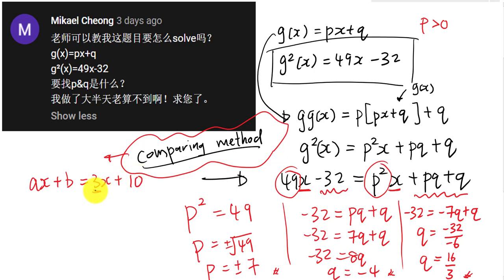By comparing methods, we know 3 is equal to a, so I can say a equals to 3, and b will equals to 10 because b is a number without x, so b is just equals to 10.